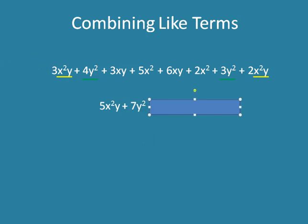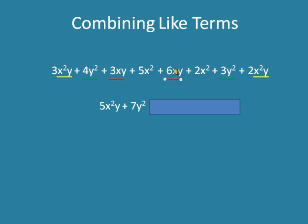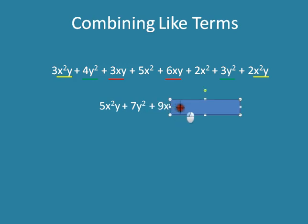Now let me look at the next one — it looks like it's an xy: 3xy. 5x squared is not an xy. 6xy — yes, that's the same term, same variable, same label. And that other one is just x squared, so I'll just look at those two: 3xy plus 6xy, and that is just 9xy.